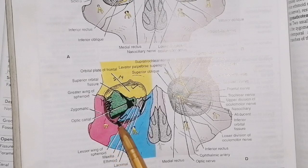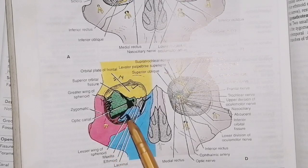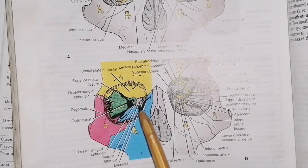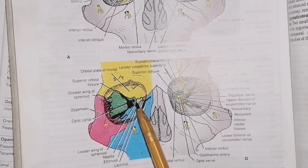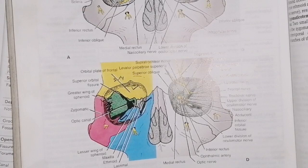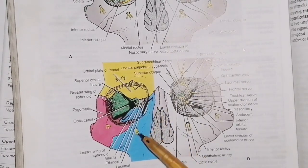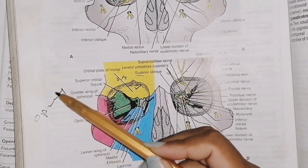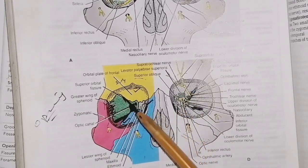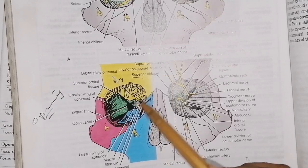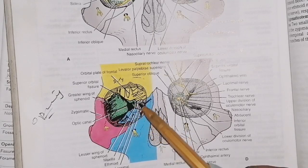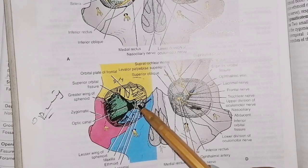The inferior wall is mainly made from the maxilla, with a small contribution from the zygomatic. The medial wall has many bones involved — it includes the ethmoid, which has a thin plate, and is also made by the lacrimal bone. The walls are: maxilla, ethmoid, sphenoid, and lacrimal.